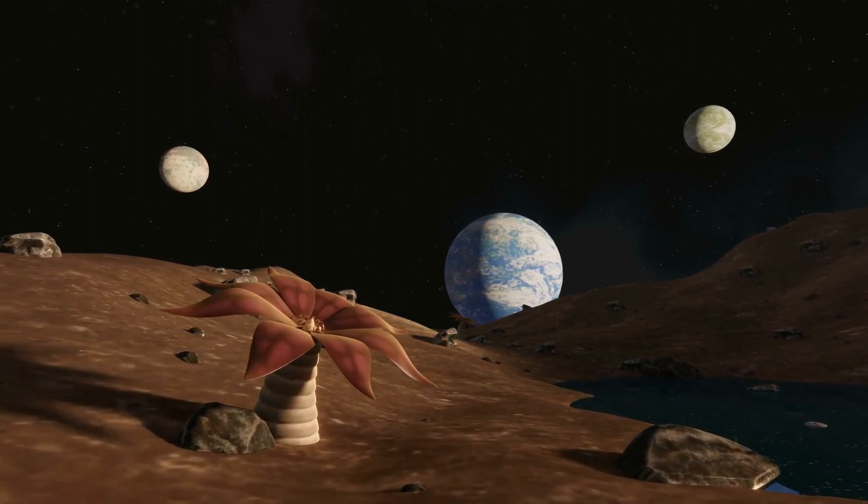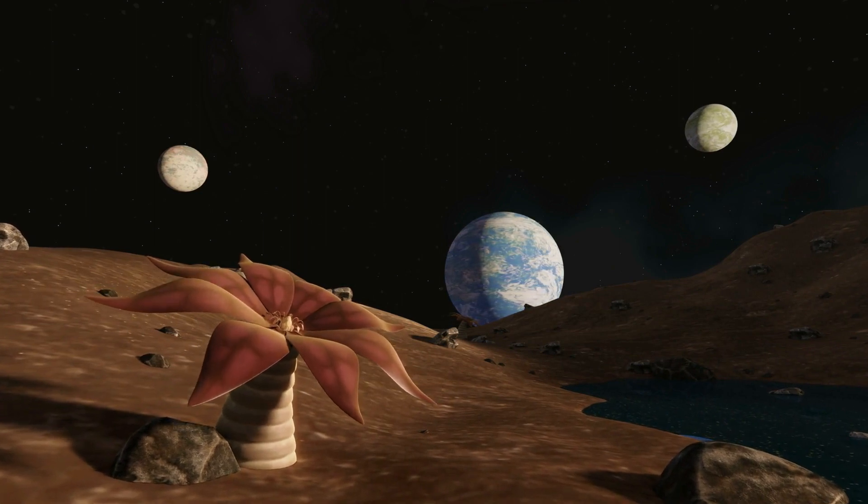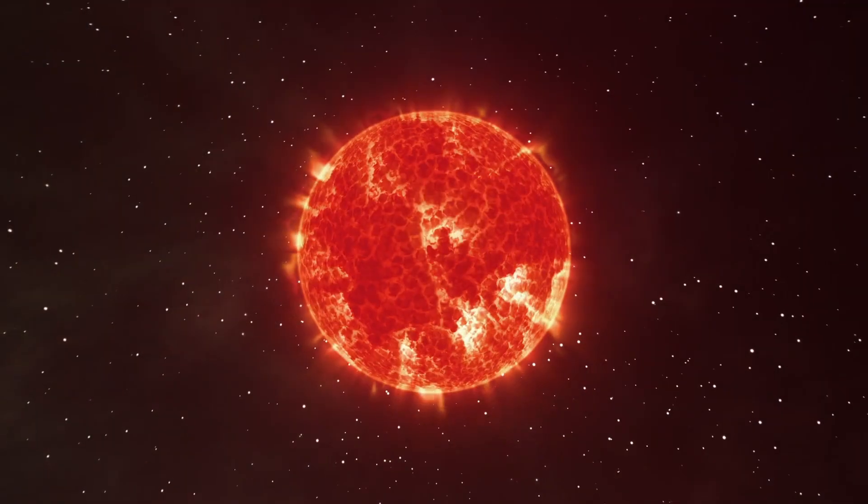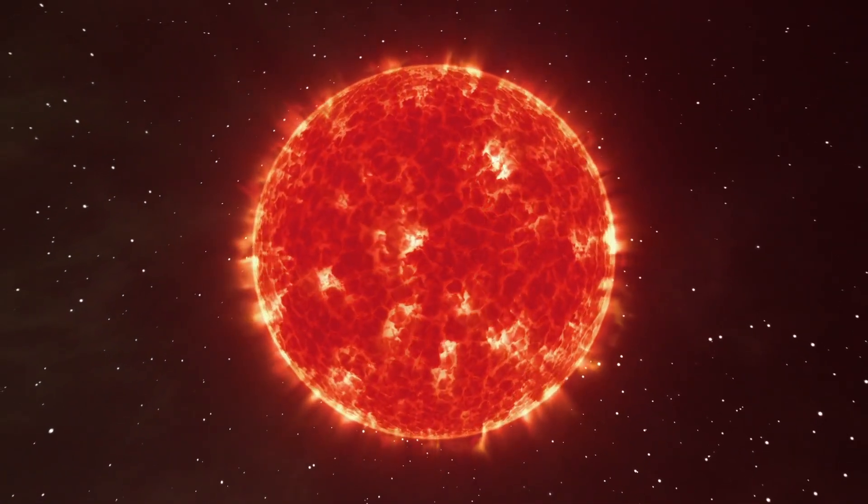However, researchers are also examining exoplanets that move around K-stars and orange dwarf stars, which are colder, less massive, and less bright. In the Milky Way, there are 50 more orange dwarfs than yellow dwarfs.